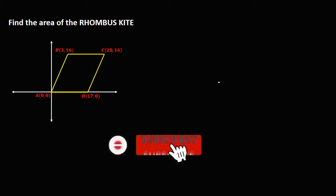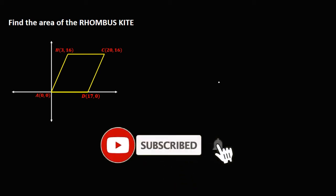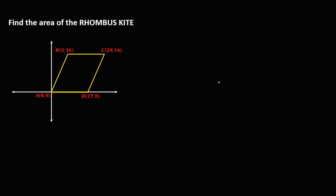Okay, so let's have this problem. Find the area of this rhombus kite. So first, we need to compute the distance from point B to point D — that's line P — and the distance from point A to point C — that's line Q. And to solve for the area of the rhombus, that's P times Q divided by 2.